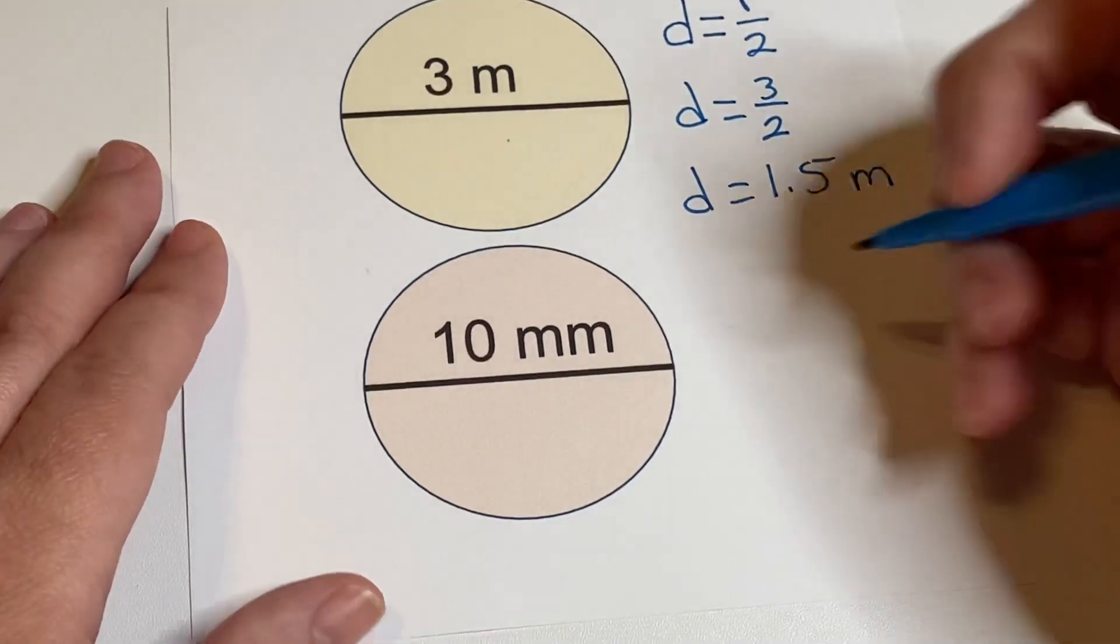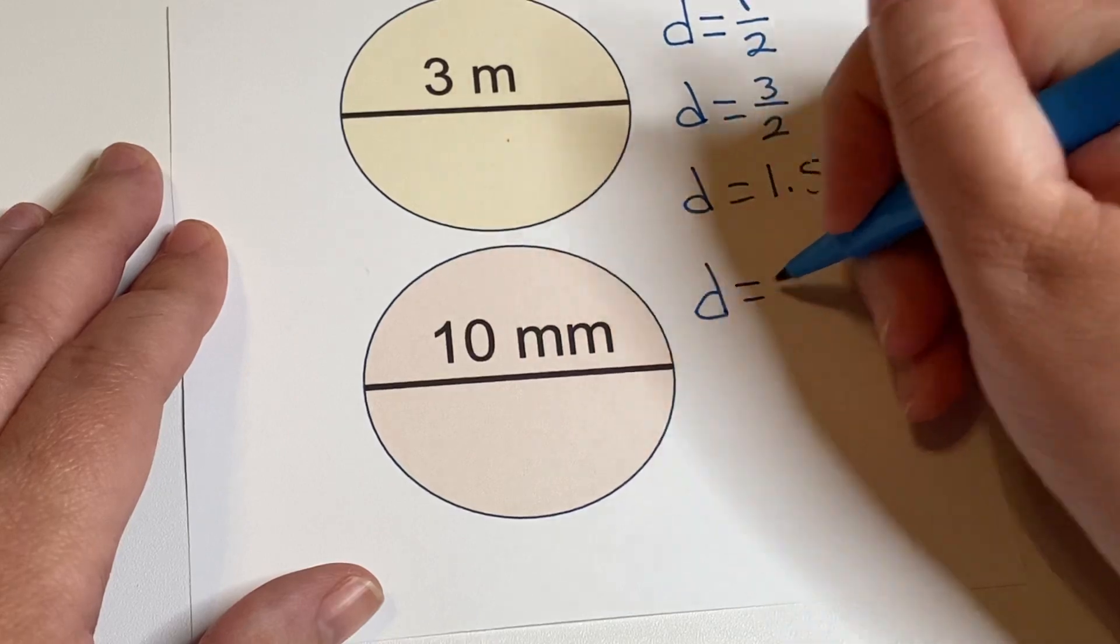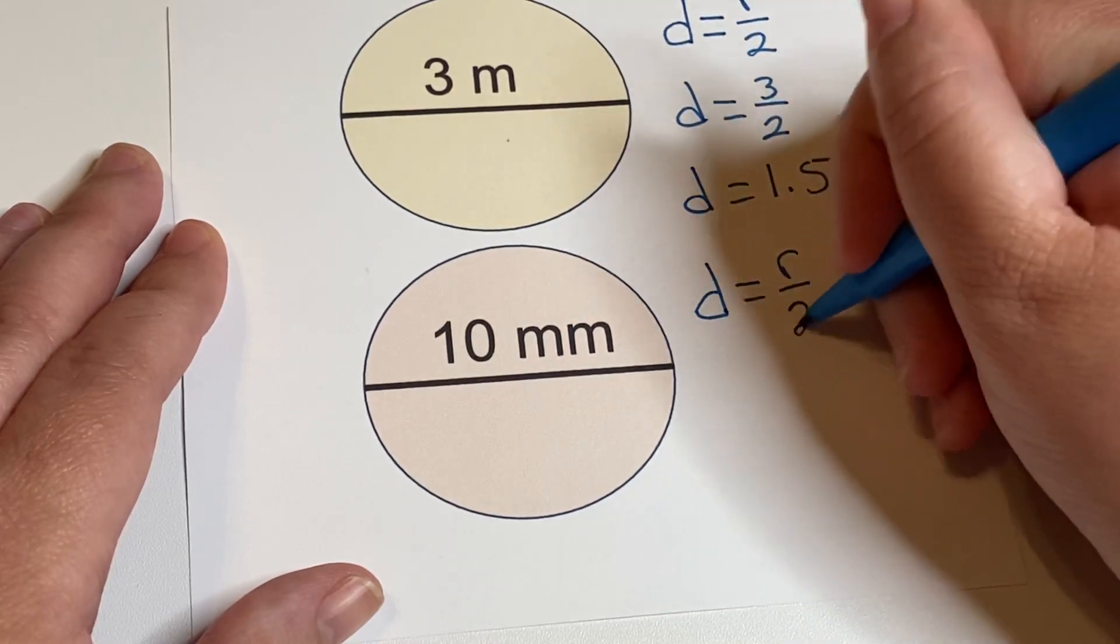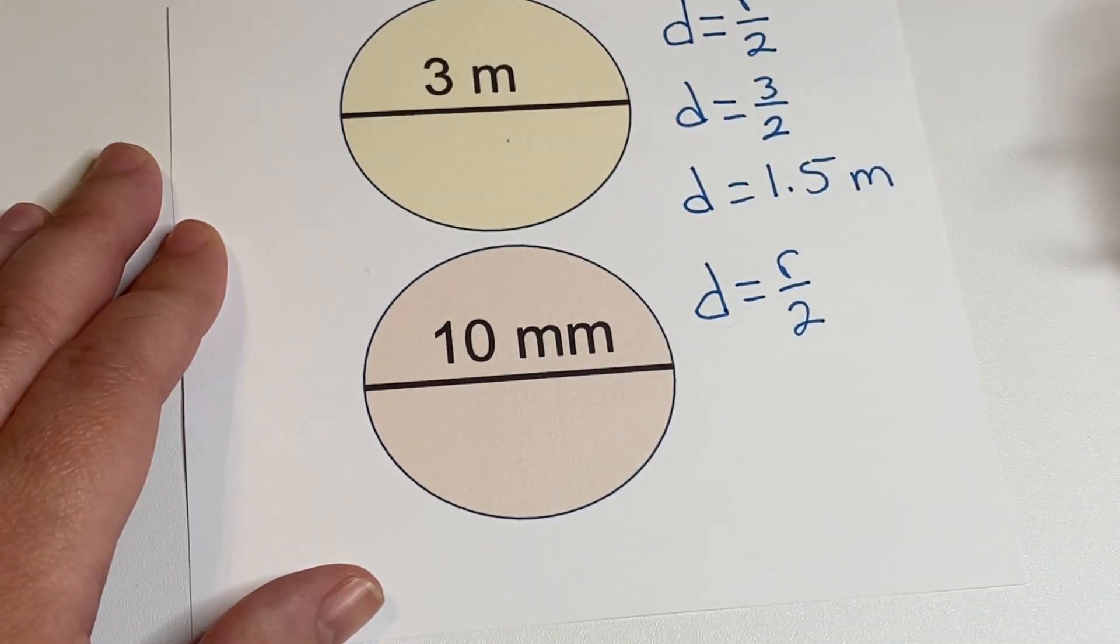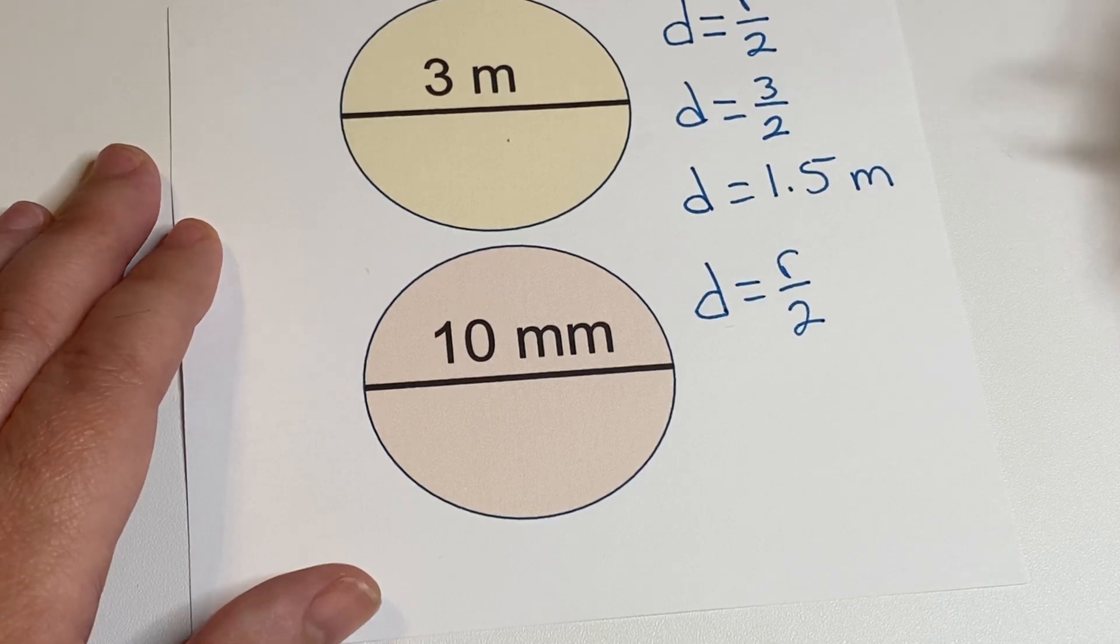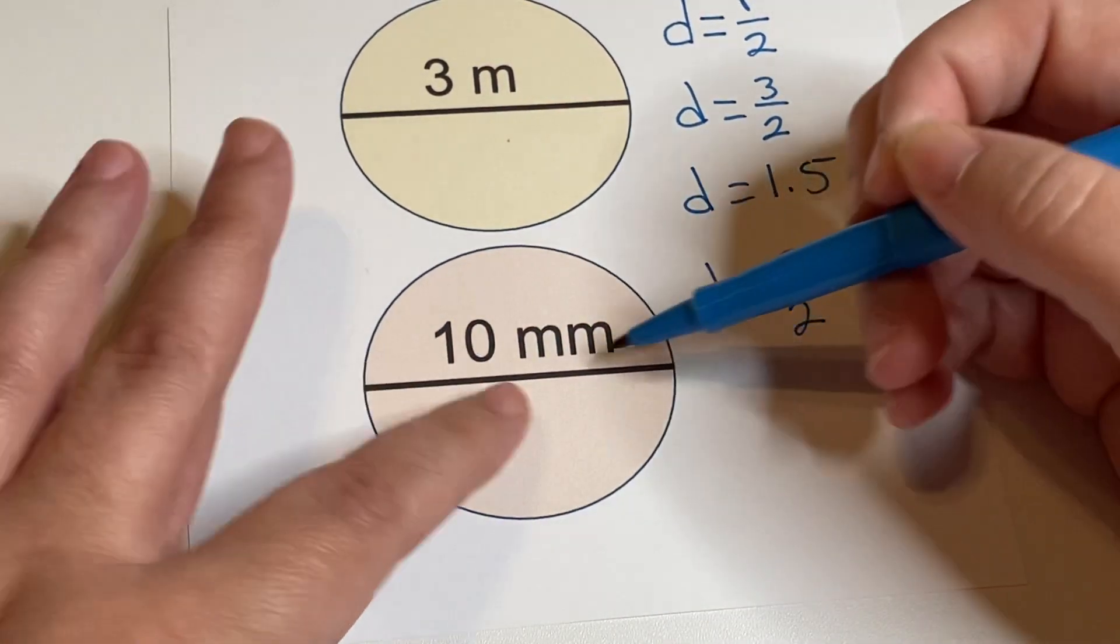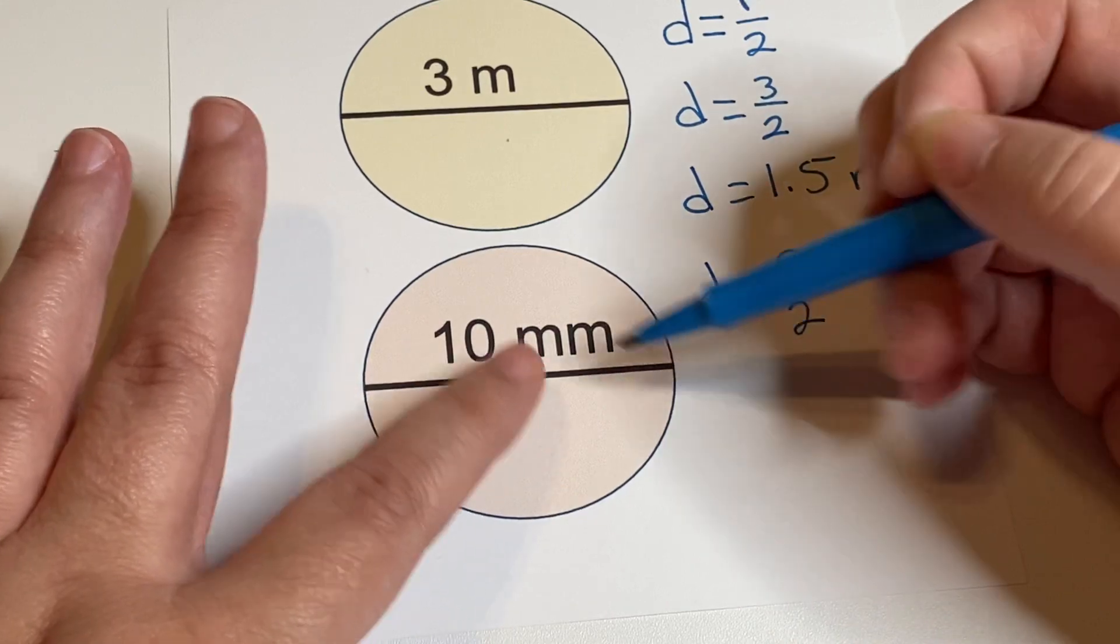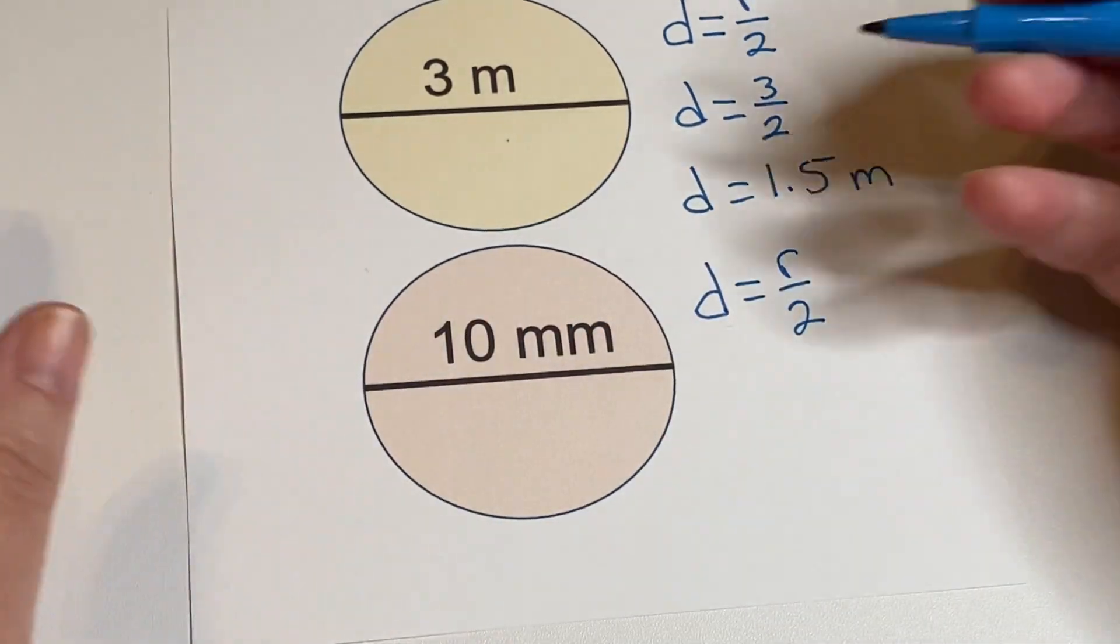And our last example diameter is equal to radius divided by 2. Or you could just look at this and say okay I have the diameter. I need the radius. It's going to be half. What's half of 10? Half of 10 is 5.